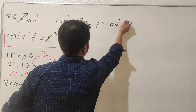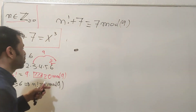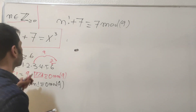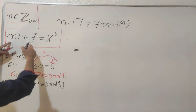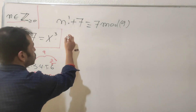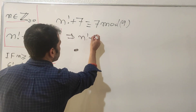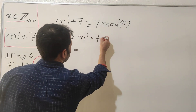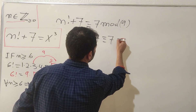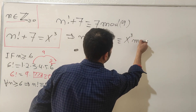Since adding seven gives us that result, and we have the equation n factorial plus seven equals x cubed, we get that x cubed is also congruent to seven mod nine. So n factorial plus seven is congruent to seven, and at the same time congruent to x cubed mod nine.